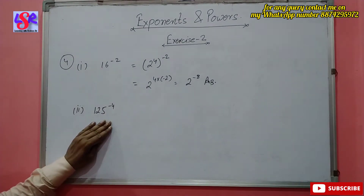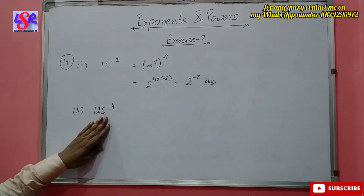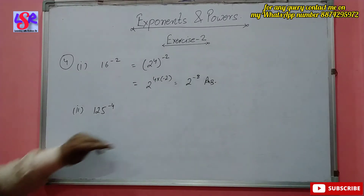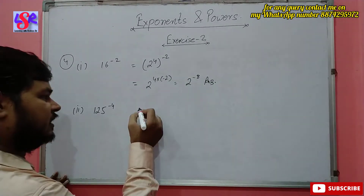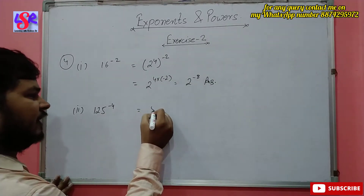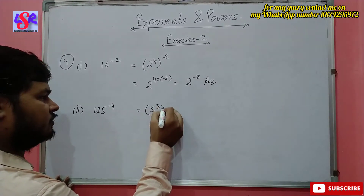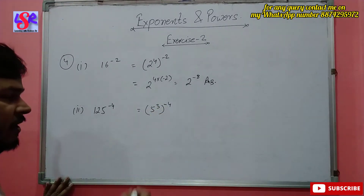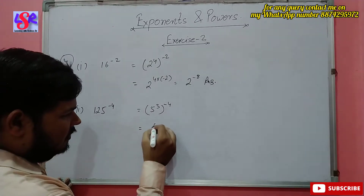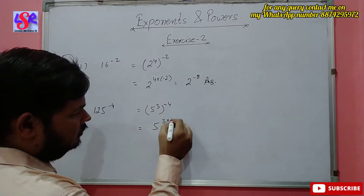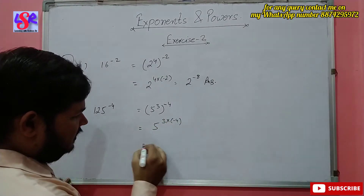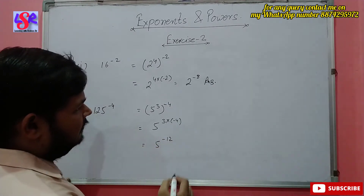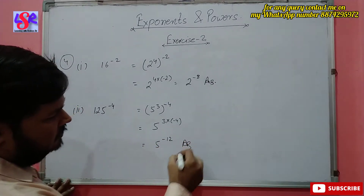The second part is 125 to the power minus 4, and we have to write it with a base of 5. We know 125 can be written as 5 to the power 3, so this gives 5 to the power 3 whole to the power minus 4. Then 5 to the power 3 into minus 4 equals 5 to the power minus 12 as the answer.